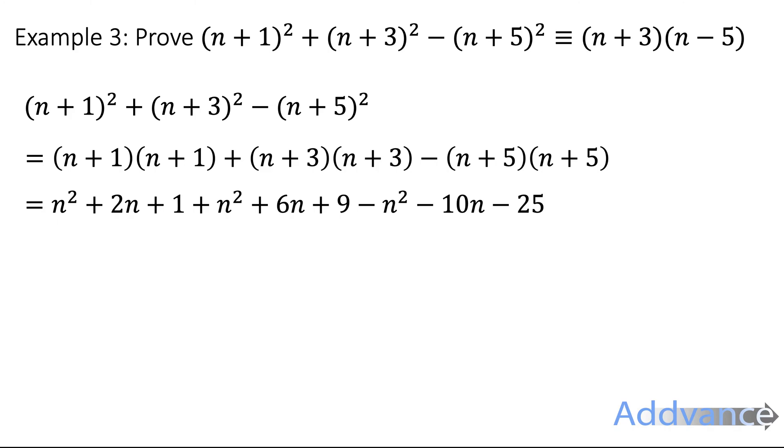So we're subtracting n squared minus 10n minus 25. Now we simplify. n squared plus n squared minus n squared is just n squared. 2n plus 6n minus 10n is minus 2n. And 1 plus 9 minus 25 is minus 15. We have simplified. Finally, just to make it look like n plus 3 times n minus 5, we just factorise. And when we factorise that, that is the same.